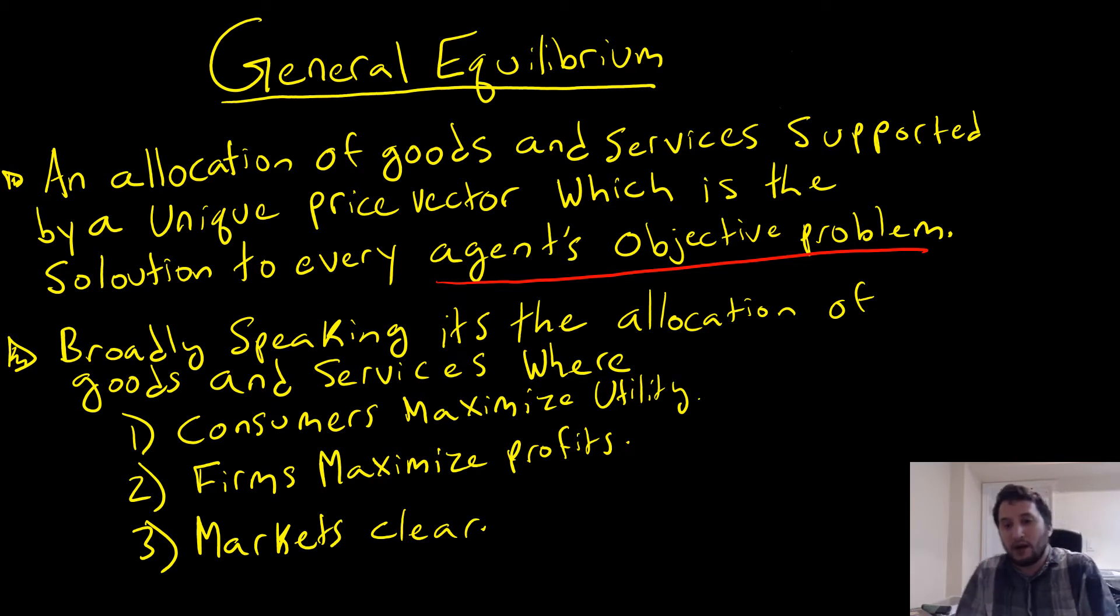Broadly speaking, it's an allocation of goods and services where consumers maximize their utility, firms maximize profits, and markets clear. Now we could be dealing with a case where our economy is an endowment economy, where we abstract from the whole concept of the firm in general. We can still have general equilibrium there in the case of an exchange economy; we just would take out this second part over here. But usually this is the broadest definition that we have.